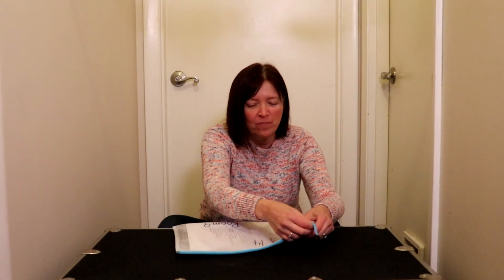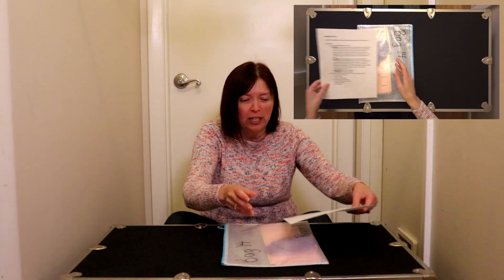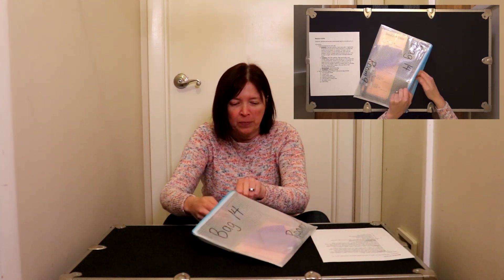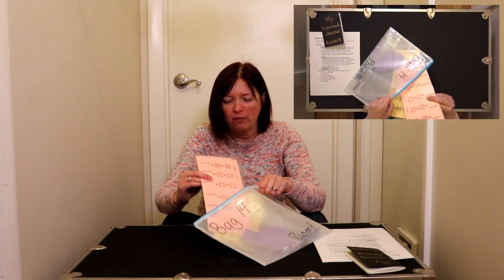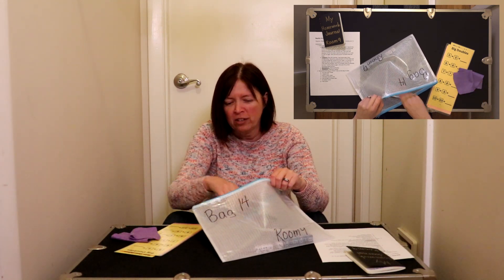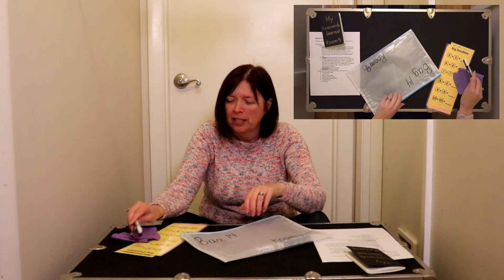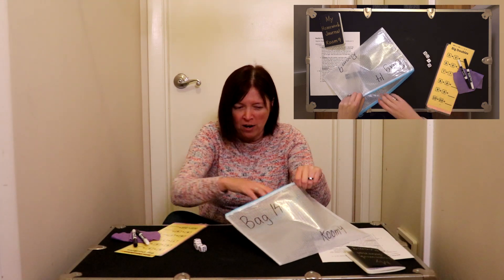Alright, let's see what's inside today. Today we have our instruction sheet. Our homework journal we'll put aside for later. We have some doubles mats, some game mats, some erasers, two dry erase markers, four dice, and four number cubes.